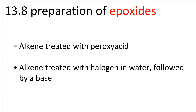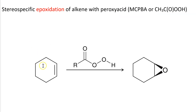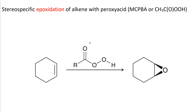Let's look at the details. Here is cyclohexene, and we're treating it with RCOOOH. The RCOOOH is the peroxy acid, and the peroxy acid can be metachloroperoxybenzoic acid or peroxyacetic acid.